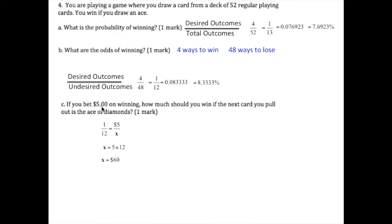So if you bet $5 at 1 to 12 odds, you will win $60.